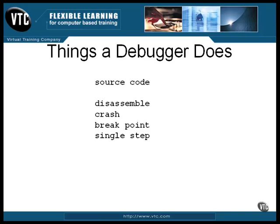Another way to do that is with hardware assistance. The CPU is set so it executes one instruction at a time and halts to turn things over to the debugger. The debugger then checks the address to determine whether a breakpoint has been reached. This second scheme makes another function possible: the watchpoint. You may be able to set your debugger to monitor one or more data items and catch the point in the program where they change or become a specific value.